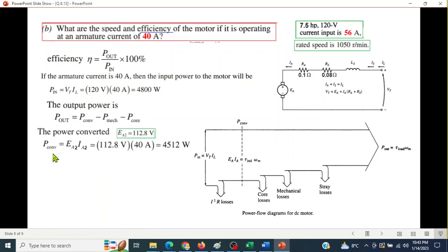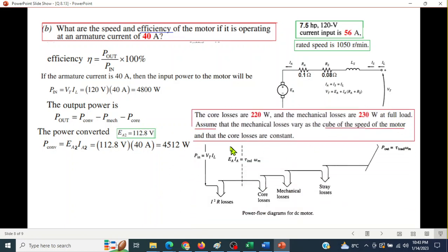So first of all, P_converted is EA times I_a. That means EA2 for this current, it will be EA2 and I_a2. So 112.8 we had calculated, and the current is 40 ampere, so this is P_converted. Now P_mechanical and P_core. Let's go back to the question. This is the part of the question which will be used. The question says the core losses are 220 watts, so P_core is 220 watts. The mechanical losses are 230 watts at full load. So this loss is 230 watts, but it is at full load. We are going to find for 40 ampere, so this is not full load.